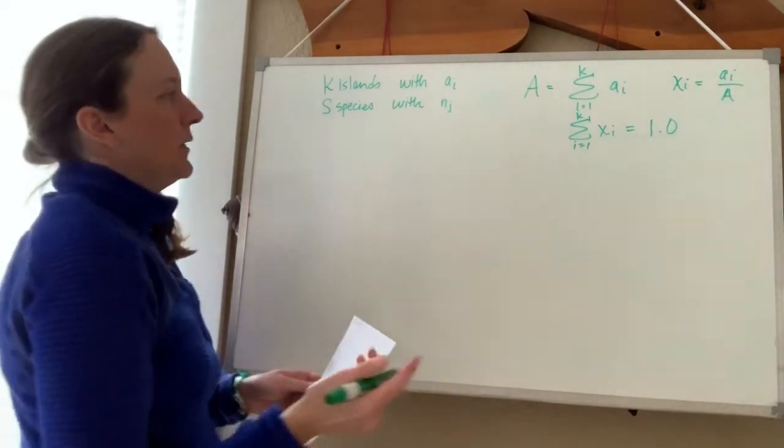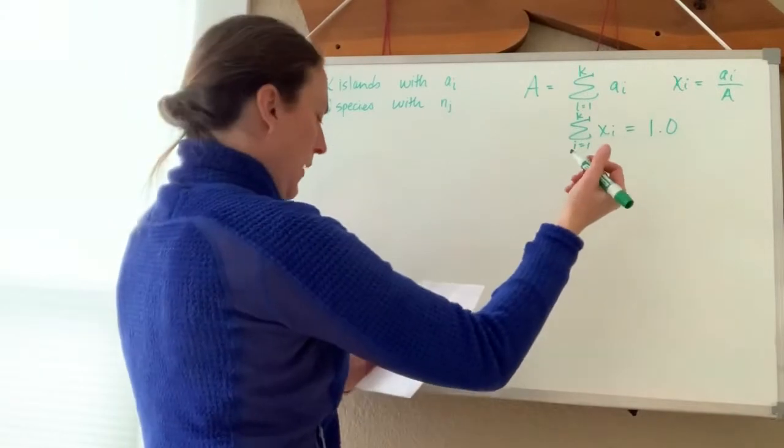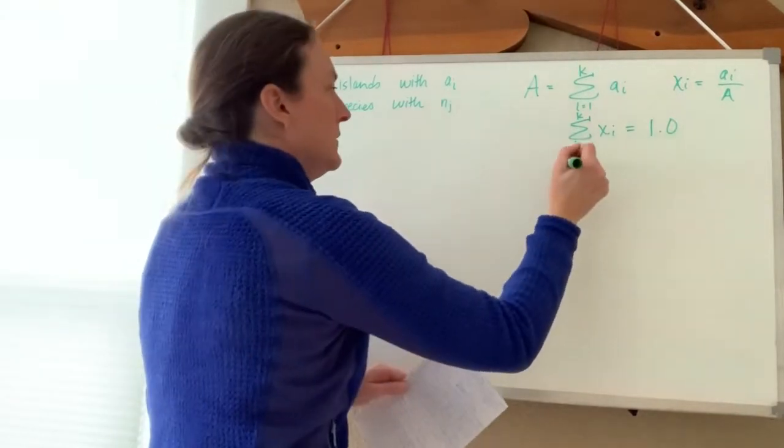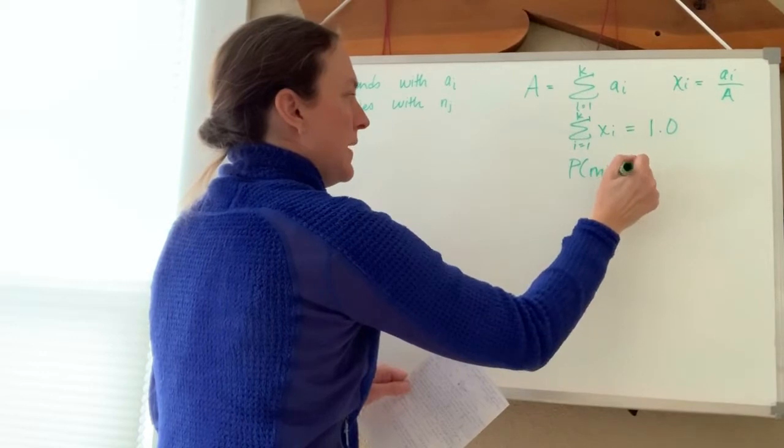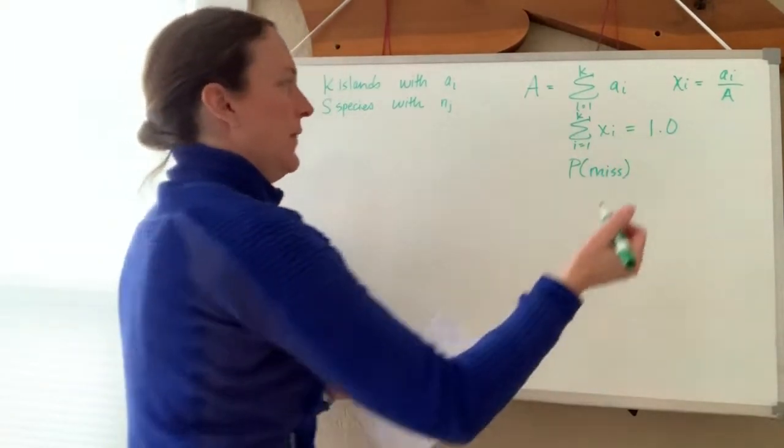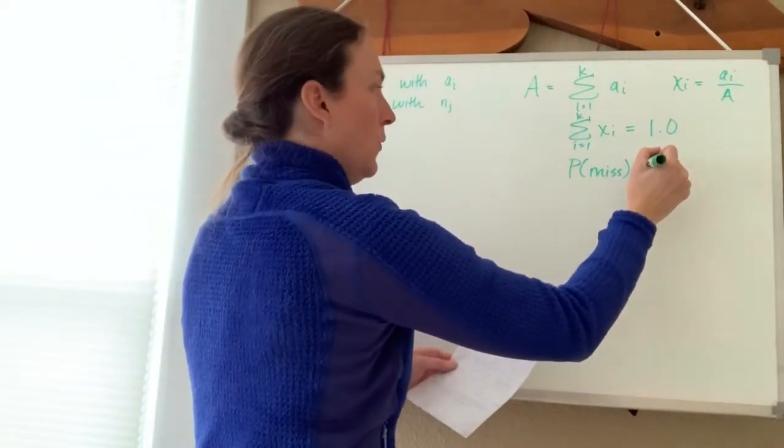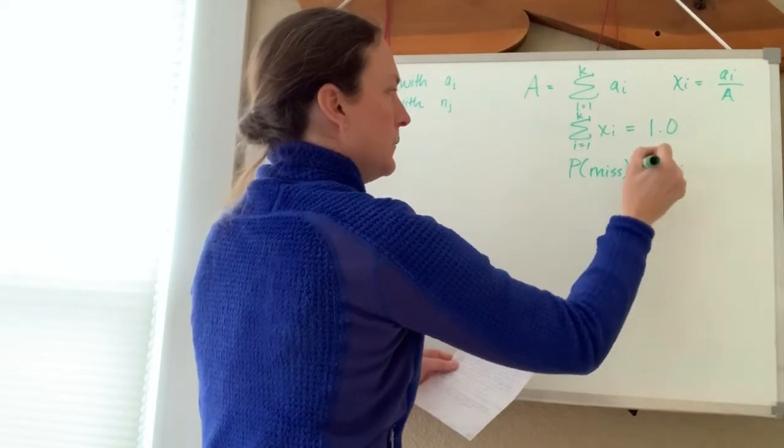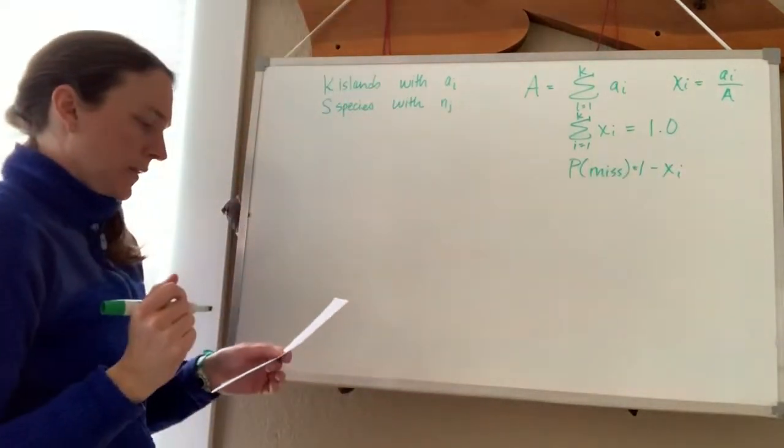And we can also work with the probability that a species might miss an island, and that would be 1 minus x_i, the probability of a miss.